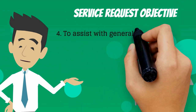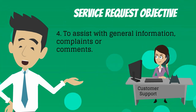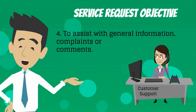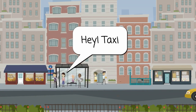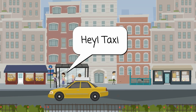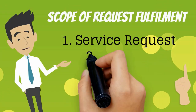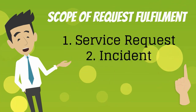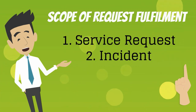Objective 4: To assist with general information, complaints, or comments. For any questions related to product, delivery timelines, or information, we can reach out to customer care. Objective 5: Requesting a taxi for transportation is a service request — transportation is offered as a service through taxis and we are requesting to be transported. The process needed to fulfill a request will vary depending upon exactly what is being requested, but can usually be broken down into a set of activities that have to be performed.